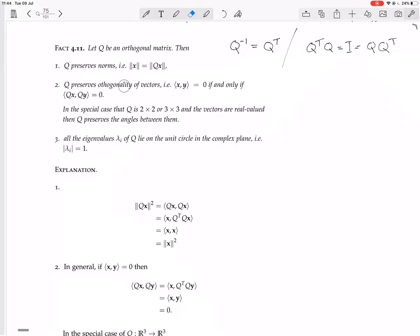Q preserves orthogonality of vectors, i.e. the inner product of X and Y is 0 if and only if QX, QY equals 0. So if X and Y are orthogonal, then QX and QY are orthogonal. And if X and Y are not orthogonal, then QX and QY are not orthogonal. And if QX and QY are orthogonal, then X and Y are orthogonal. And if QX and QY are not orthogonal, then X and Y are not orthogonal. This is basically saying it preserves right angles between vectors.